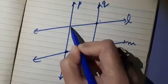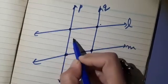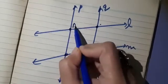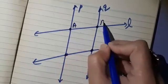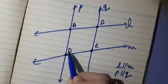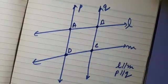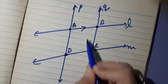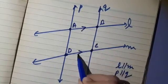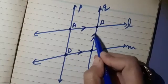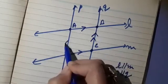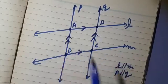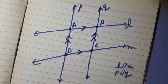Now observe the points of intersection and let me mark their names A, B, C, D. You can see that AB is parallel to CD and BC is parallel to AD.